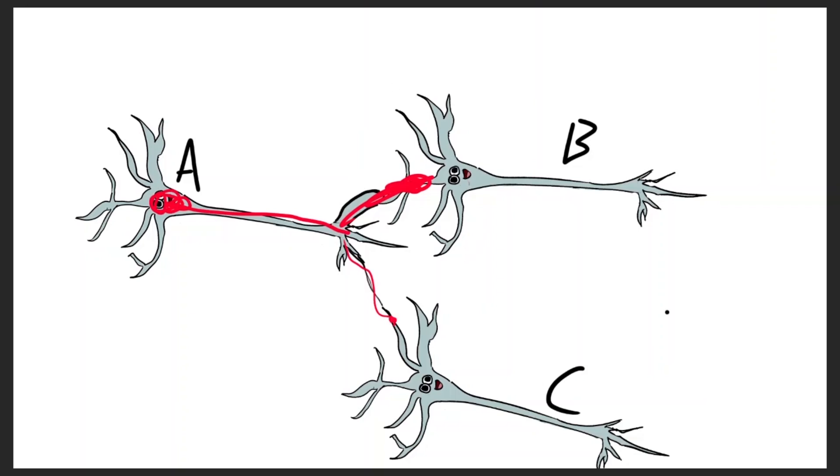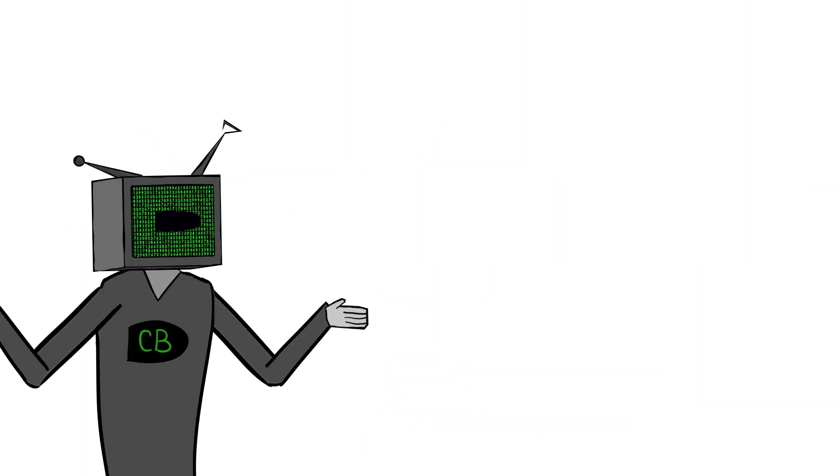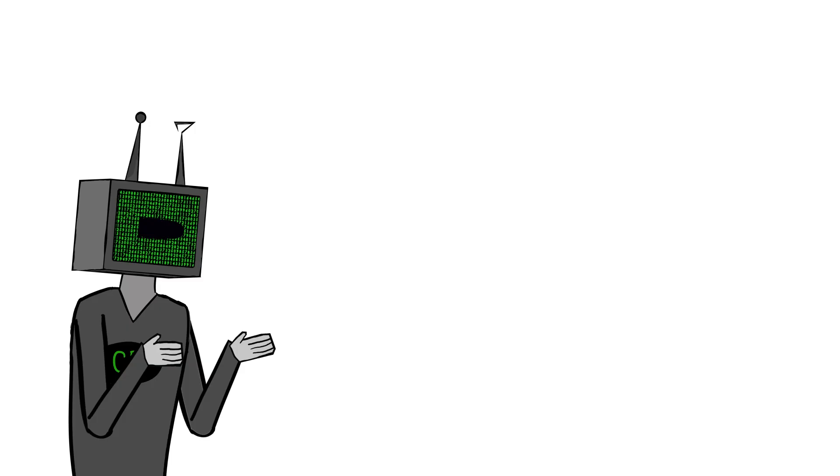Of course, there's a bunch more stuff going on in the brain that I don't understand, and even some stuff that no one understands. But we have enough information to build our own little brainy thingy, and that is what we call a neural network.